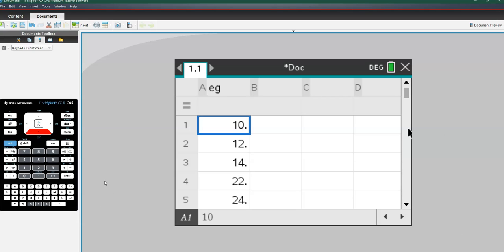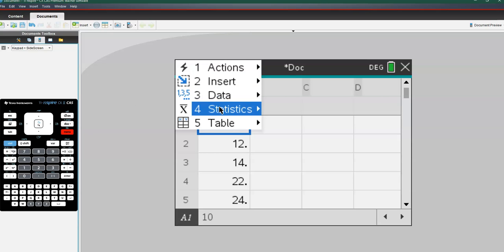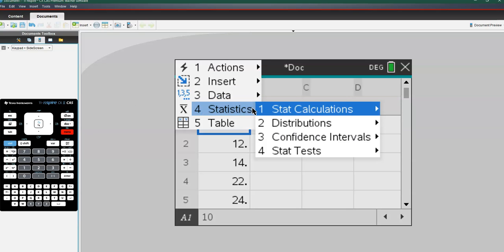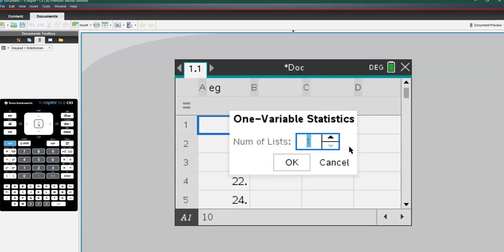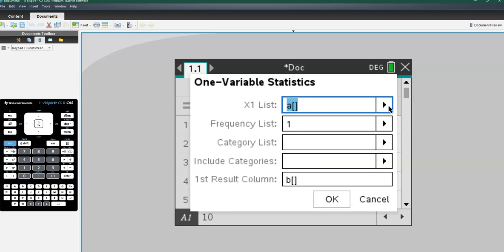So once I have my data in, I'm going to go into the menu, I'm going into number four, statistics, one to stack calculations, and then into the first one here, one variable statistics. And so this means I'm going to calculate a set of data or statistics from one set of numbers. I have one list and that will be fairly standard of what you're looking to do. And then it will ask me where is this list of data. So I've labeled mine EG and this is helpful when you've got multiple sets of data that you need to find particular statistics for. And then I can just click OK.